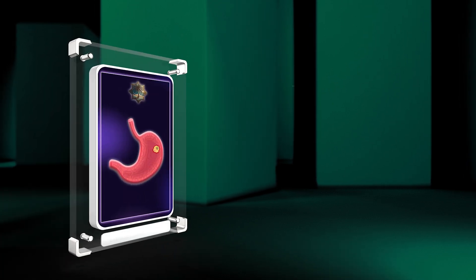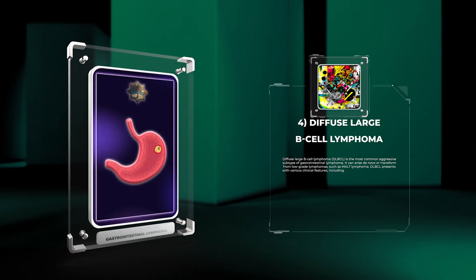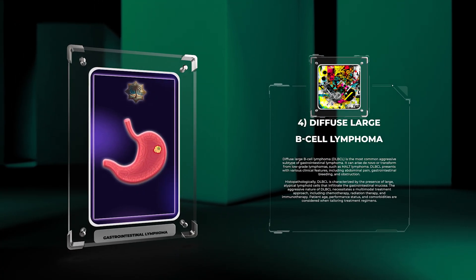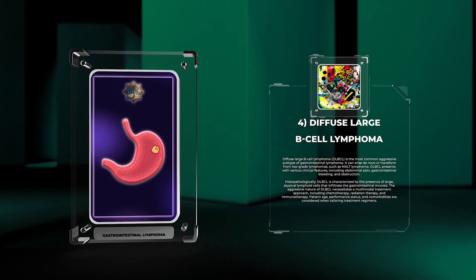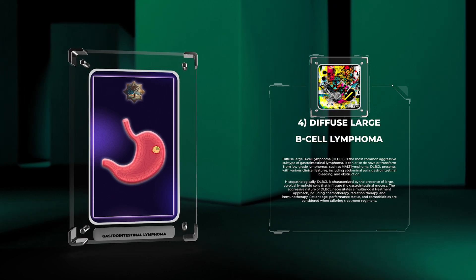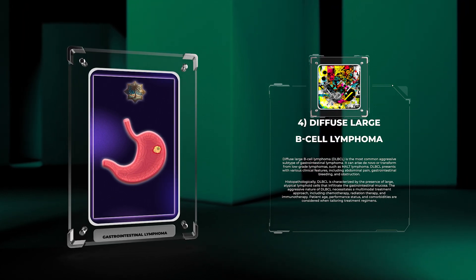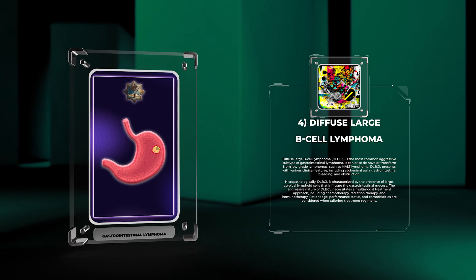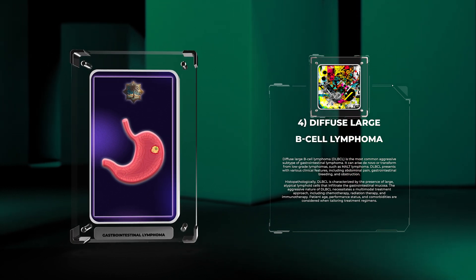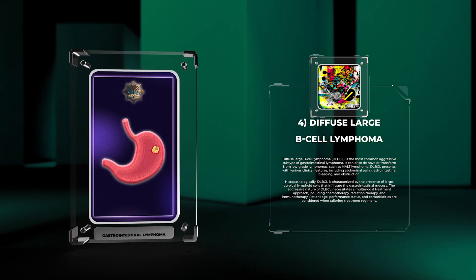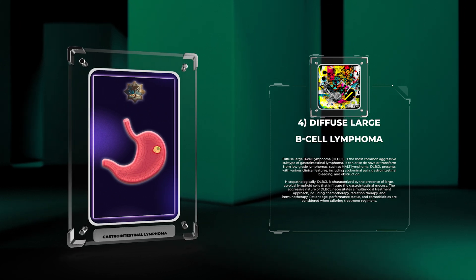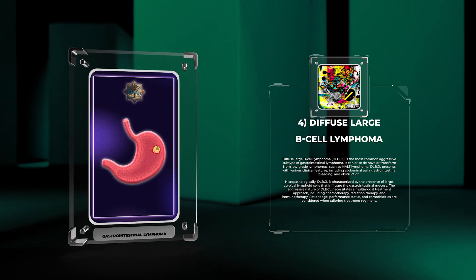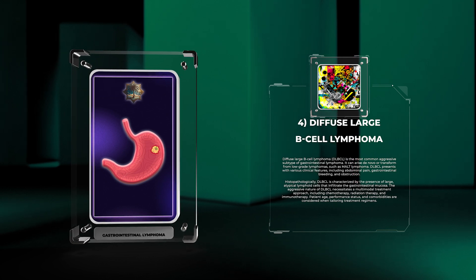Diffuse large B-cell lymphoma (DLBCL) is the most common aggressive subtype of gastrointestinal lymphoma. It can arise de novo or transform from low-grade lymphomas such as MALT lymphoma. DLBCL presents with various clinical features including abdominal pain, gastrointestinal bleeding, and obstruction. Histopathologically, DLBCL is characterized by the presence of large atypical lymphoid cells that infiltrate the gastrointestinal mucosa.